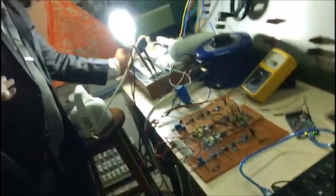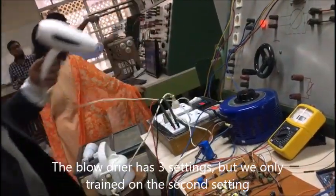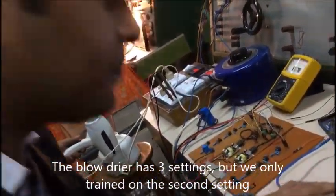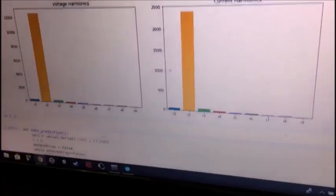Alright, now we will try the blow dryer. And the neural network says prediction equals 1 which is blow dryer setting 2.